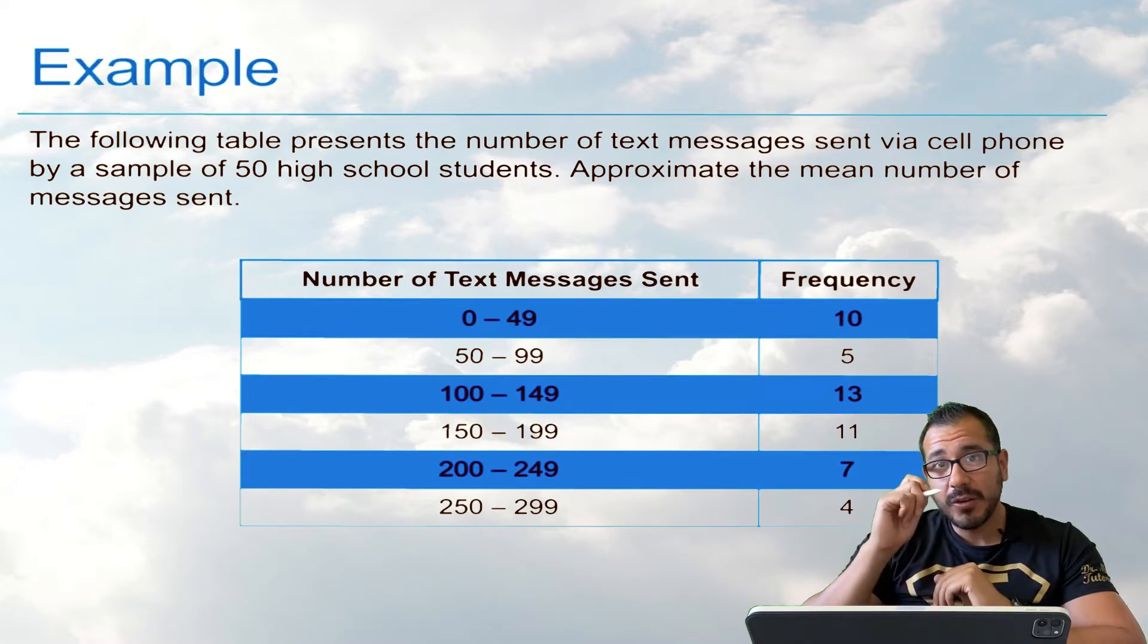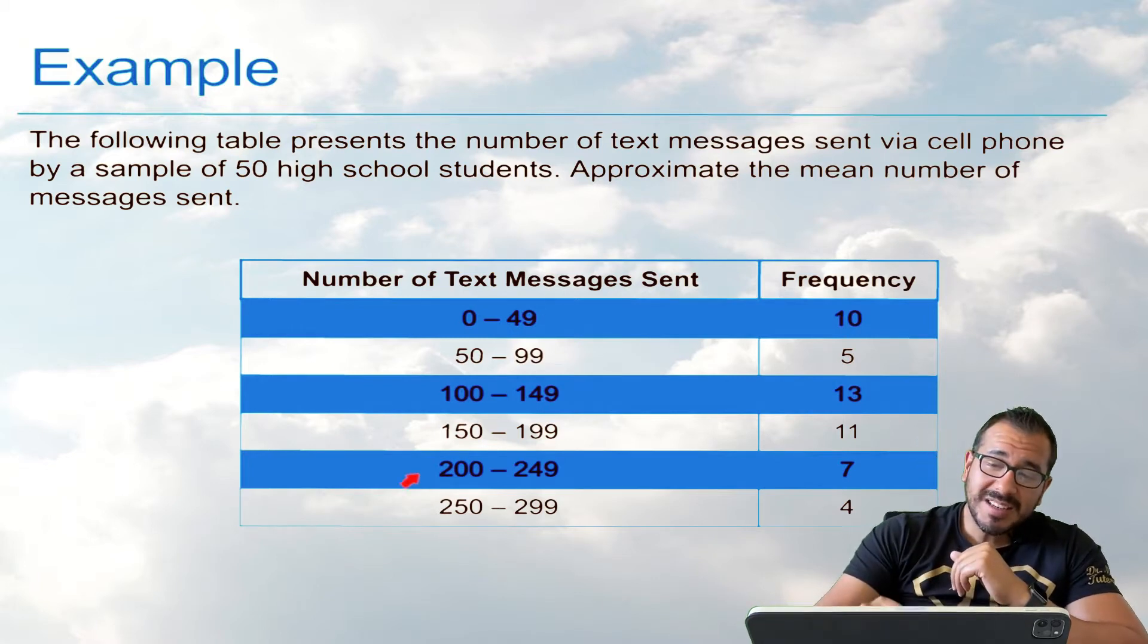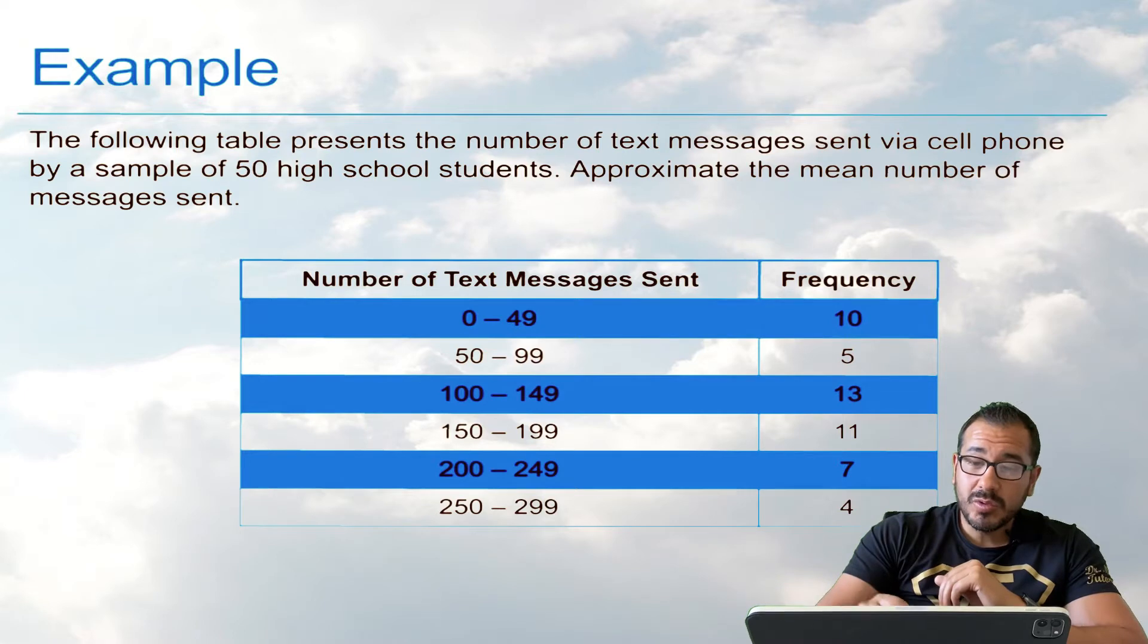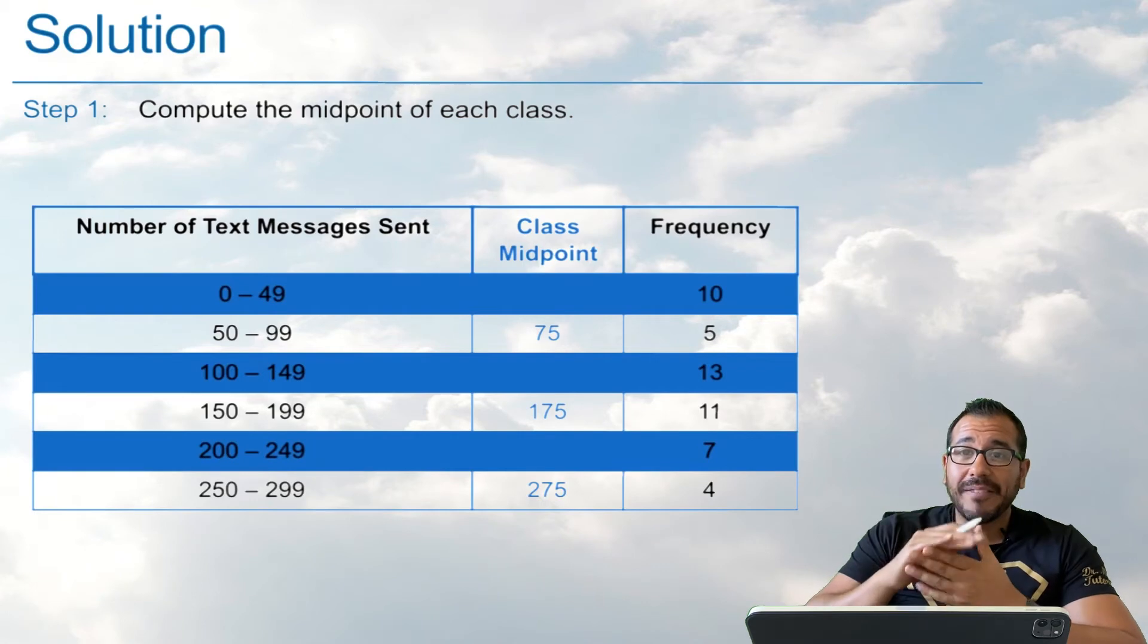So first things first, if you're the person that wrote down in your notes the step-by-step, notice what it said. The first thing we're going to do is we're going to take this list here, this column, excuse me, and we're going to find the midpoint of each one of these rows here. So let's go ahead and let's do that. Find the midpoint of each one of these cells. All right, Dr. Math, so how in the heck do I find the class midpoint?